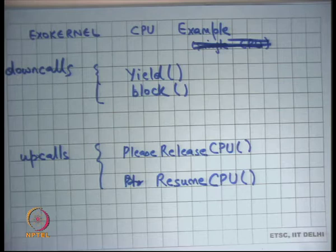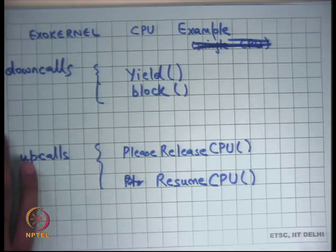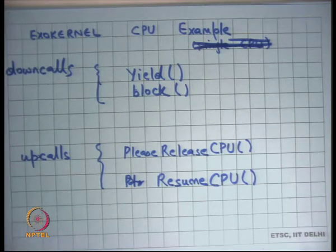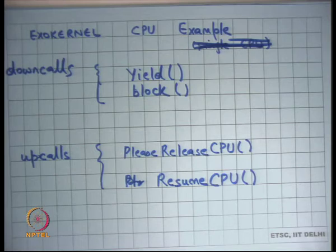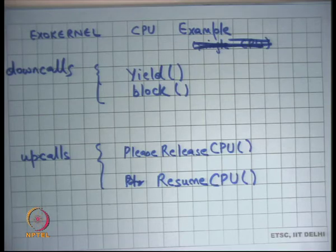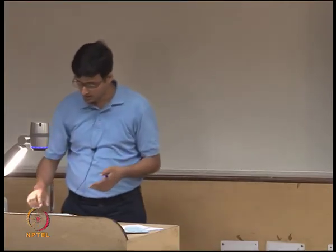Exokernel CPU: you have down calls like yield and block, similar to Unix. Yield means I want to stop running on the CPU — somebody else can run — but I'm ready to run, so if there's nobody else, I can be rescheduled. Block means I'm blocked until woken up by somebody, so I'm not available to run.